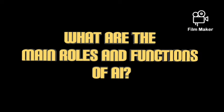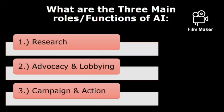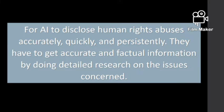What are the main roles or functions of Amnesty International? Amnesty International operates under three main roles of function to achieve its vision and mission. These roles include: one, research; two, advocacy and lobbying; and three, campaigns and actions. These functions are interrelated and one leads to another.